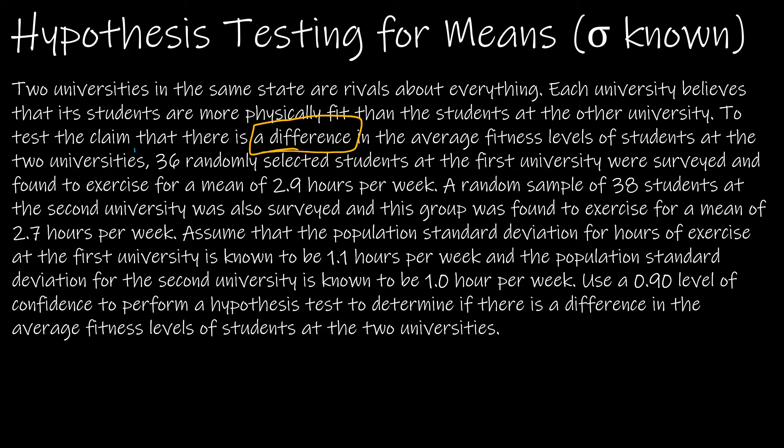In the average fitness levels of students at two universities, 36 randomly selected students at the first university were surveyed and found to exercise for a mean of 2.9 hours per week. A random sample of 38 students at the second university was also surveyed, and this group found to exercise for a mean of 2.7 hours per week.